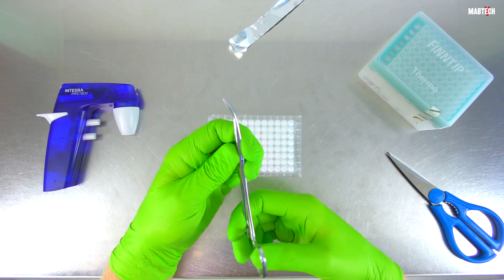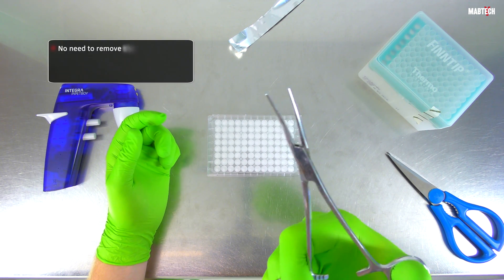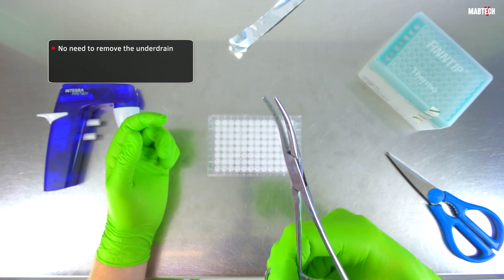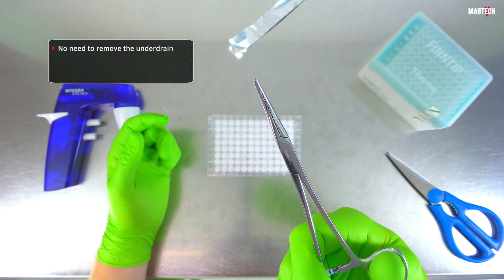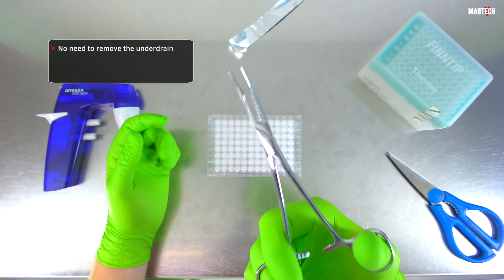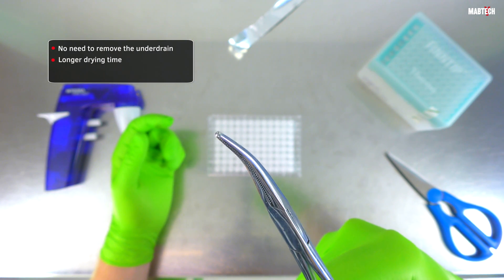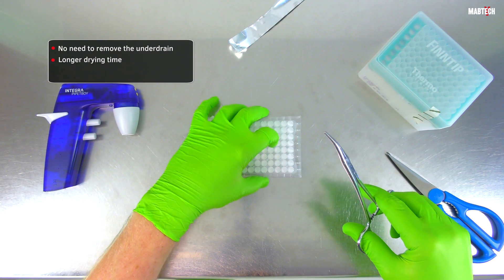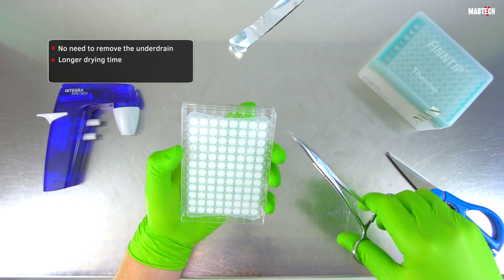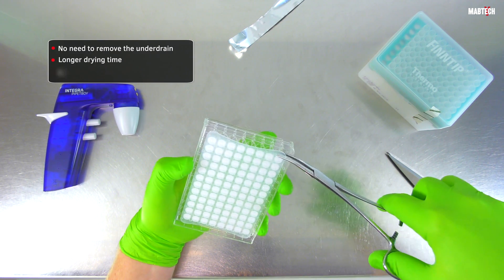Finally, in our MabTech protocol, we do not explicitly state that the underdrain must be removed following spot development. In fact, in my experience, the only downside to keeping the underdrain in place is that it will take longer for the plate to dry. Nevertheless, many users desire faster drying time and will attempt to remove the underdrain.